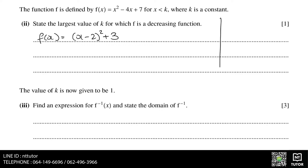In the completed square format, it tells us the coordinates of the vertex. In this case, the coefficient of x squared is positive, so we have a curve that opens upwards, and the coordinates of the vertex are at 2, 3.